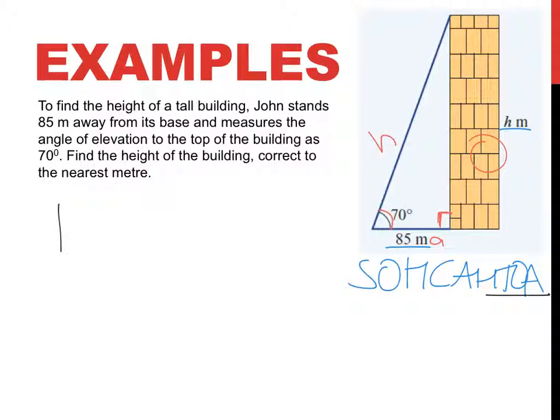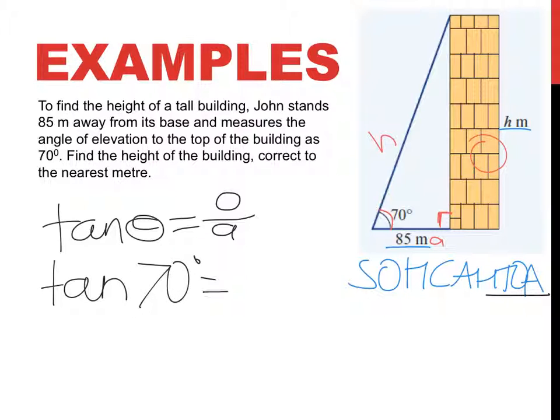So the tan of whatever angle I have is the opposite over the adjacent. The tan of 70 degrees equals my opposite, I don't know, H over my adjacent, which is 85. What I do to one side, I do exactly the same thing to the other. So if H is being divided by 85, I need to times this side by 85. If I times that side, I have to do the same thing to this side. So these guys cancel out.